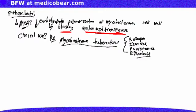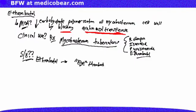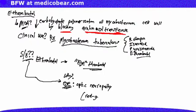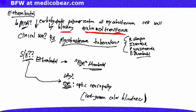Now let's look at some of the side effects of ethambutol. For these purposes, go ahead and call it 'eye-thambutol.' Why? The side effects affect the eye, causing optic neuropathy and red-green color blindness. This is very high yield and unique to ethambutol.